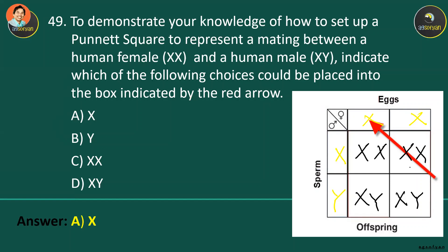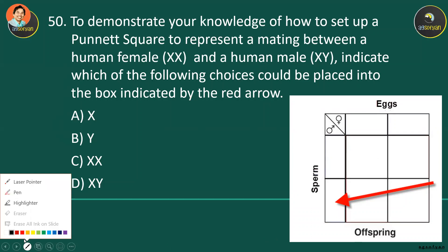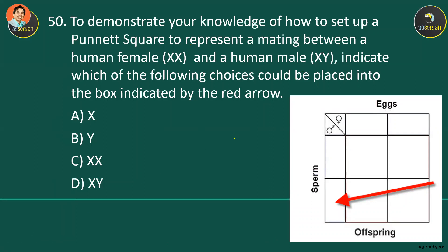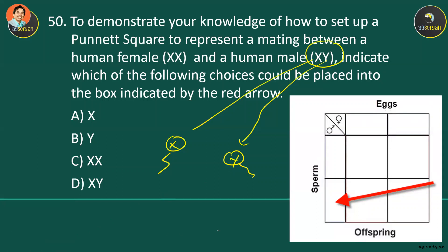Continuing the Punnett square for sex determination: the male's sperm carries either X or Y chromosome. The second position in the Punnett square table represents the Y chromosome from the male. So the first sperm carries X and the second carries Y, giving a 50% chance of daughters and 50% chance of sons.